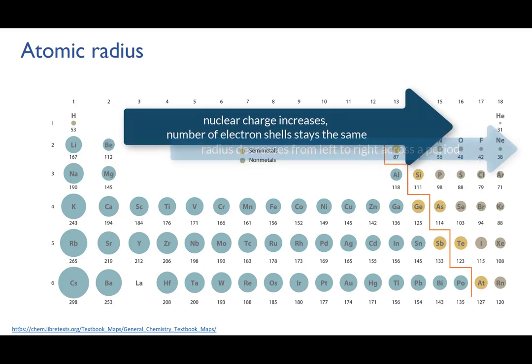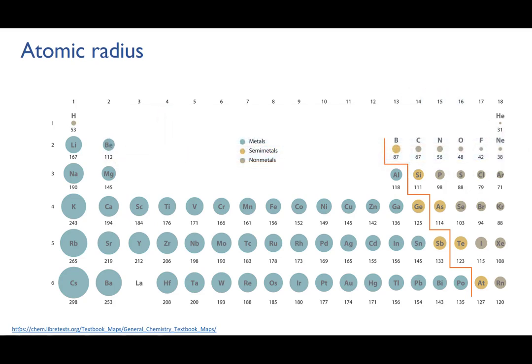OK, so what you need to be able to do is justify differences in atom sizes, and also be able to predict given two atoms, which will be the larger. Test yourself. Pick random elements from the periodic table, make a prediction, justify your choice to yourself, and then check your answer on this table.